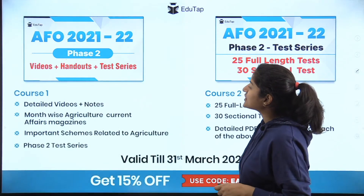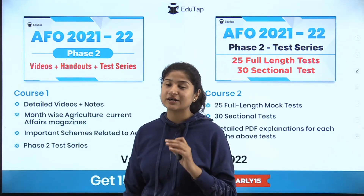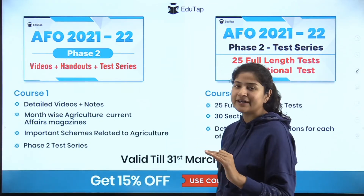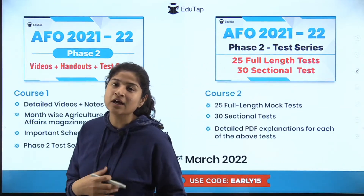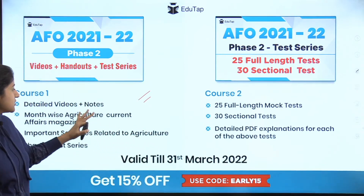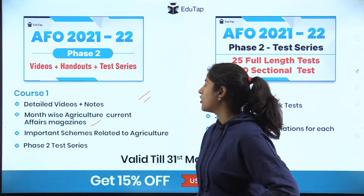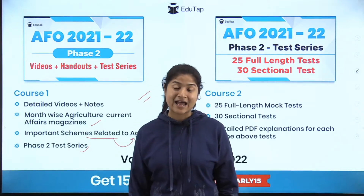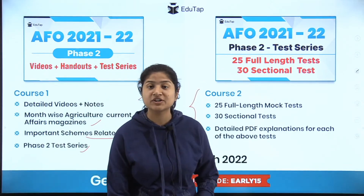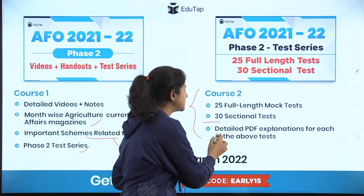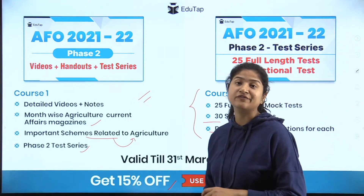The AFO examination phase two is quite important for making the merit list. EduTap has two courses: Course One includes video lectures, notes, summary sheets, current affairs agriculture magazines, agriculture schemes, and a test series of 25 full mock tests and 30 sectional tests. Course Two is for those who need quick revision — it includes the same mock and sectional tests with detailed PDF explanations. Both courses are valid till 31st March; use code ID15 for 15% off.